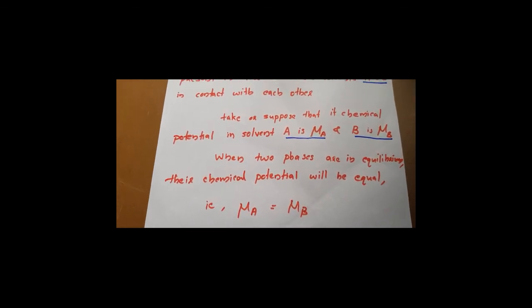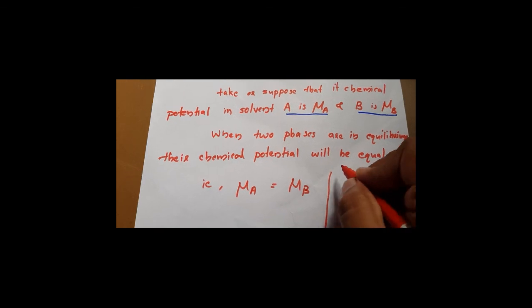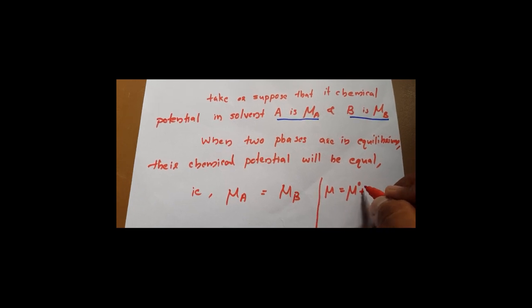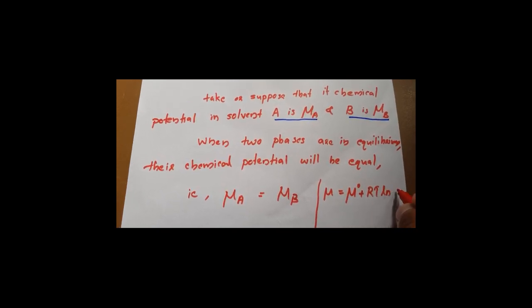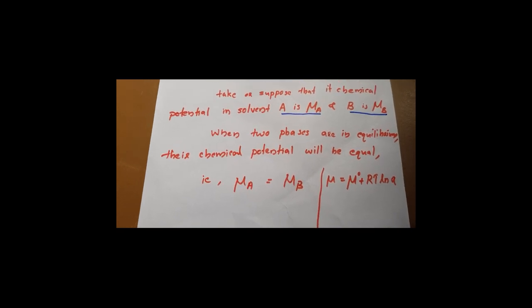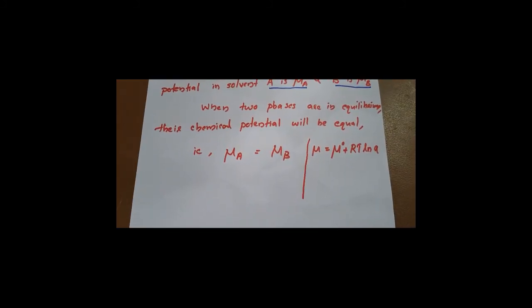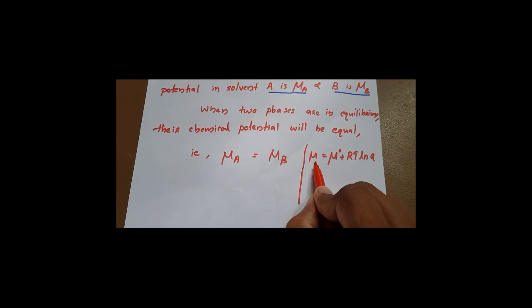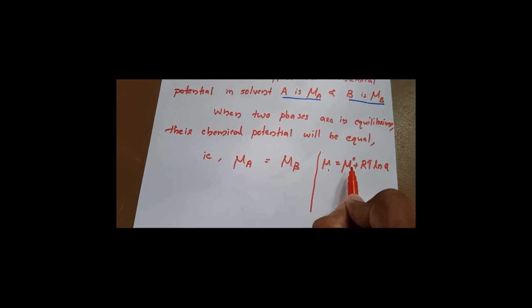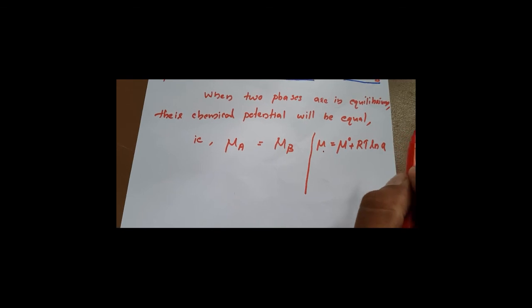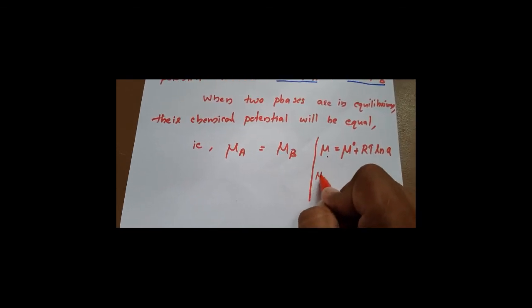According to thermodynamics, the chemical potential μ is equal to μ₀ plus RT ln A, where μ₀ is the standard chemical potential, R is the universal gas constant, T is the temperature, and A is the activity of the solute.